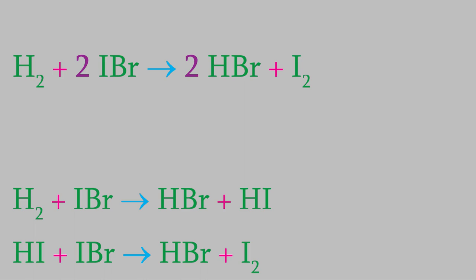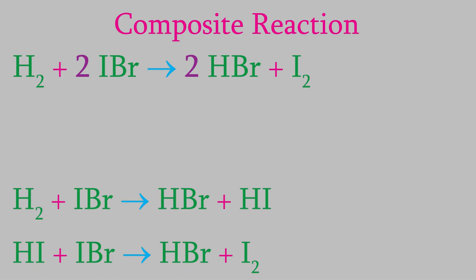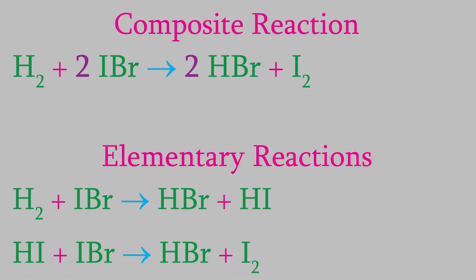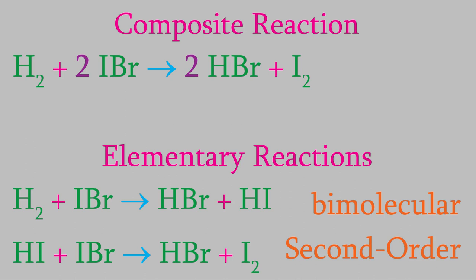When we combine the two reactions, we get the overall reaction we see at the top. The overall reaction is called a composite reaction, and each of the individual steps it took to give us the overall result is called an elementary reaction. Notice that each of the elementary reactions in this example is a bimolecular reaction because two molecules must collide during the reaction. In addition, experimentally we find out that these two elementary reactions are each second order. Remember, the reaction order must be determined experimentally. Meanwhile, the composite reaction is also second order - again, we find that out by doing experiments and figuring out the rate law.